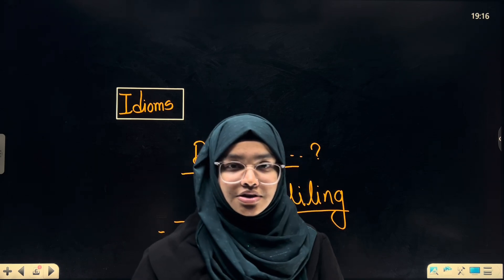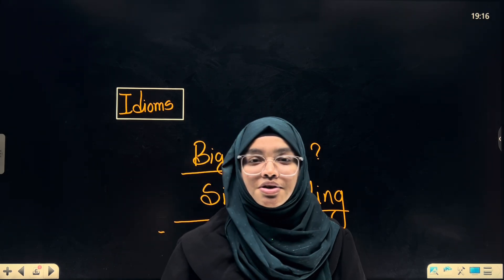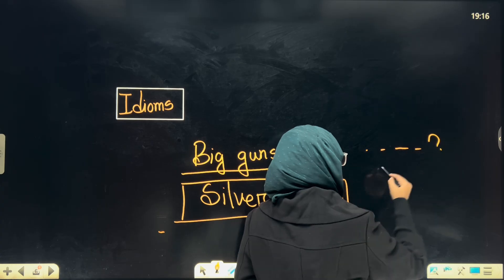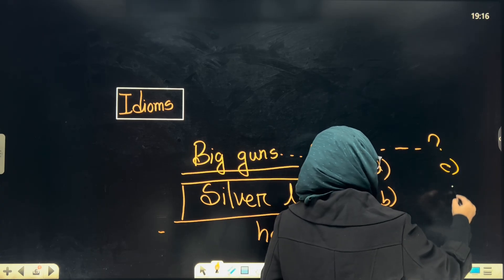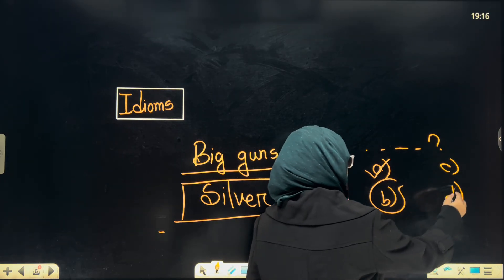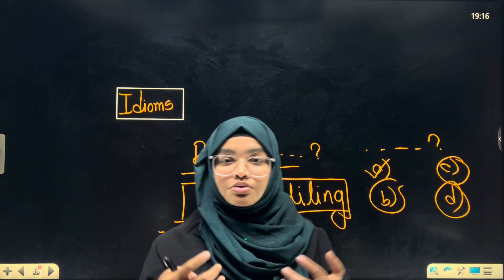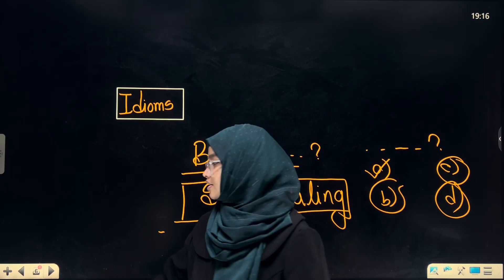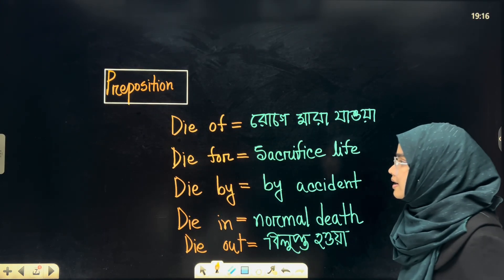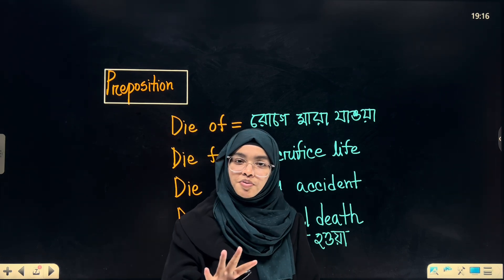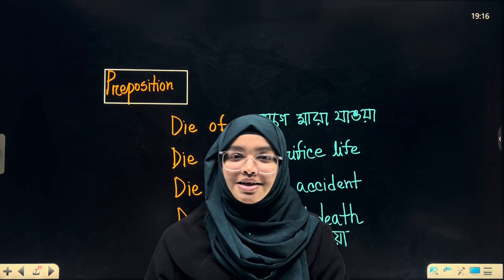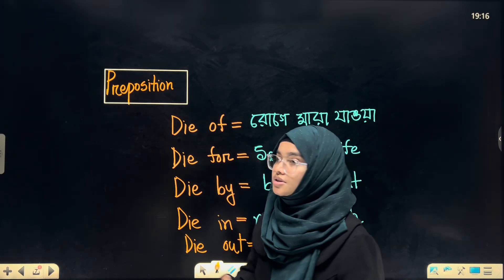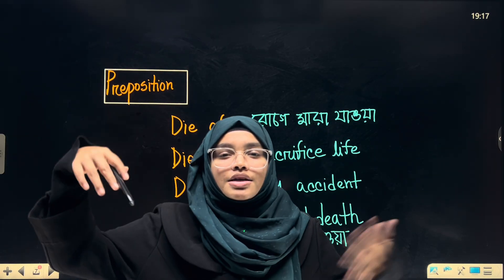These idioms and phrases are easy for you guys. In a question, you are given options A, B, C, and D, and you have to select the correct answer — matching and correlation should be checked. The most important approach: look at the options and identify which one fits. For prepositions, appropriate preposition questions are a regular topic — die of, die in, die for, die out, die by — keep these for revision.